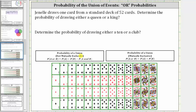In the first example, we're asked to find the probability of drawing either a queen or a king — let's indicate this as the probability of Q for queen or K for king. Because it's not possible for a card to be both a queen and a king at the same time, the events of selecting a queen and selecting a king are called mutually exclusive.